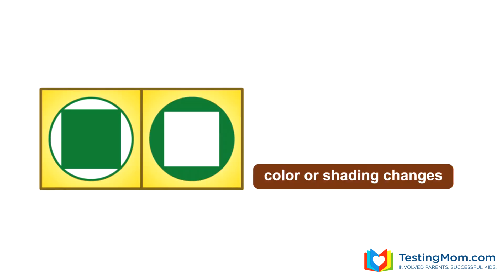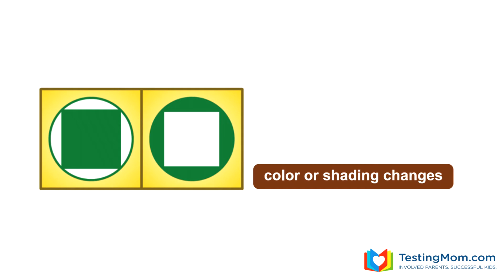With this puzzle, the rule is that the colors change from left to right. Here the colors actually switch places. And here is an analogy puzzle that follows the same rule. The rule is that the figure changes from green to blue. B is the answer.